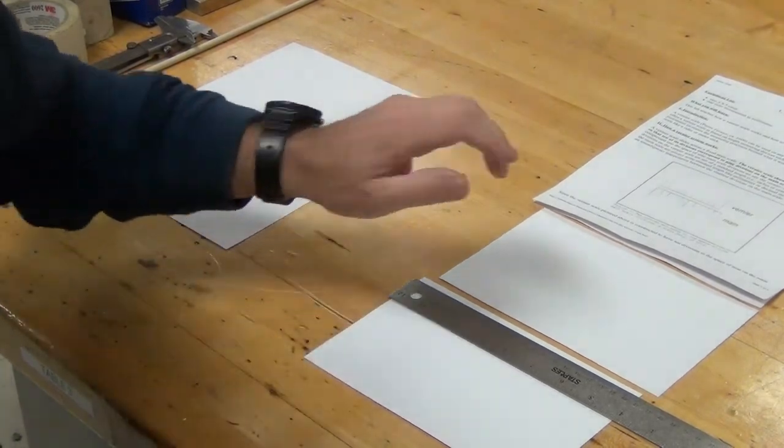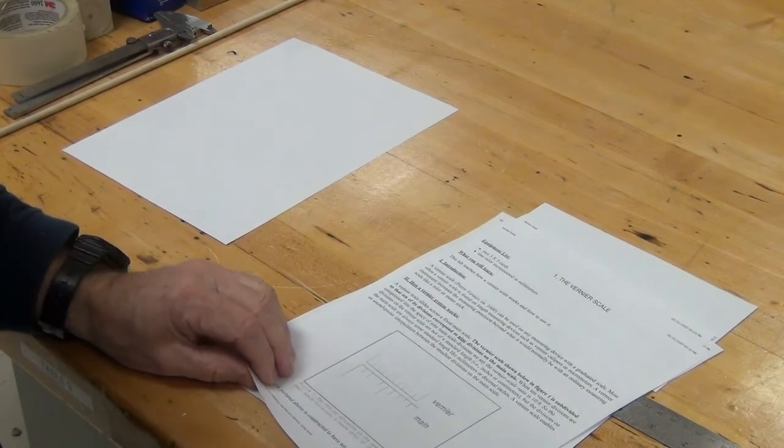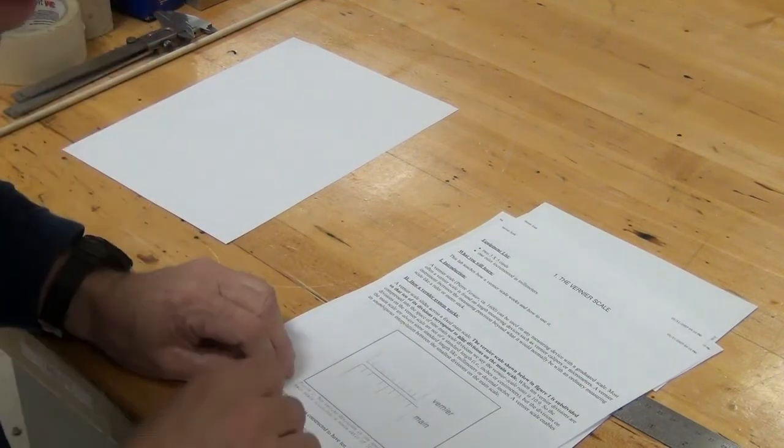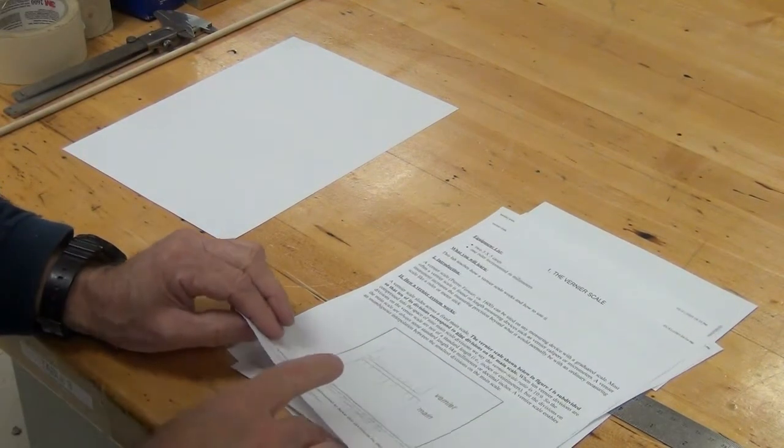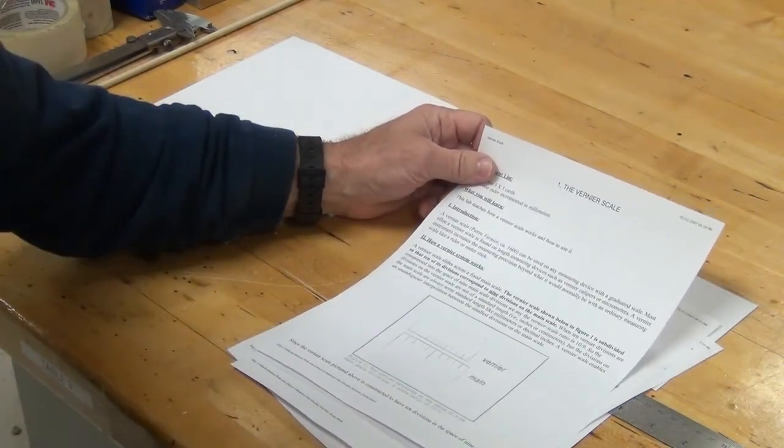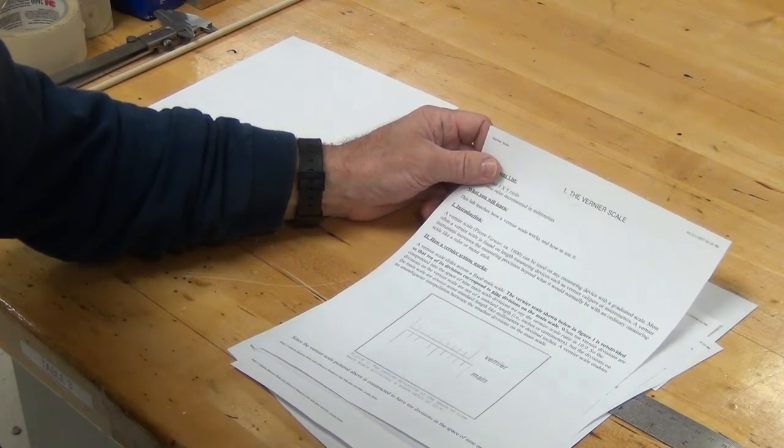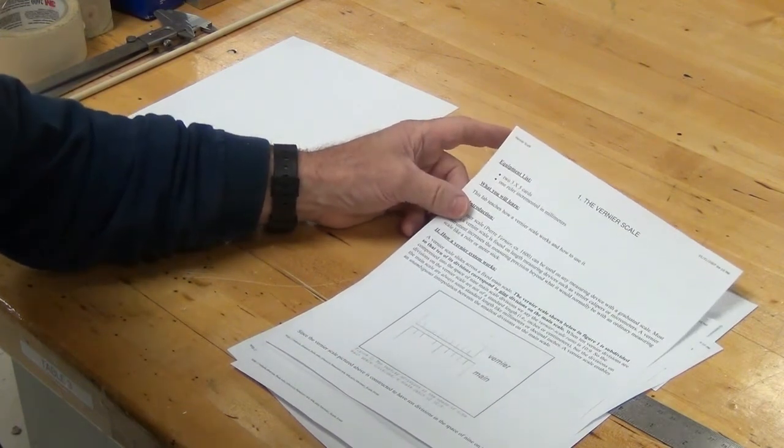So, the instructions for this activity tell us that we're gonna create a main scale and a vernier scale on a couple of index cards. Right? And we know that the main scale is gonna be the larger units, the whole units, and the vernier scale is going to indicate the fractions.